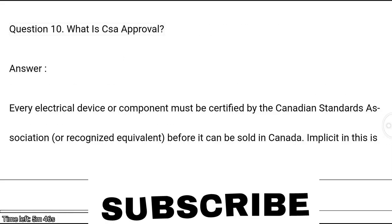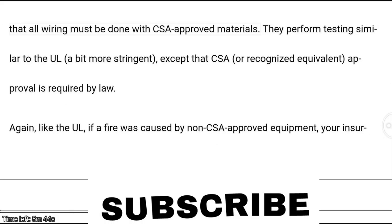Question 10: What is CSA approval? Answer: Every electrical device or component must be certified by the Canadian Standards Association or a recognized equivalent before it can be sold in Canada. Implicitly, all wiring must be done with CSA-approved materials. They perform testing similar to UL but more stringent, and CSA or recognized equivalent approval is required by law. If a fire was caused by non-CSA-approved equipment, your insurance company may not have to pay the claim.